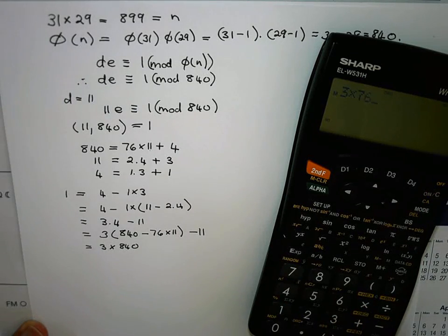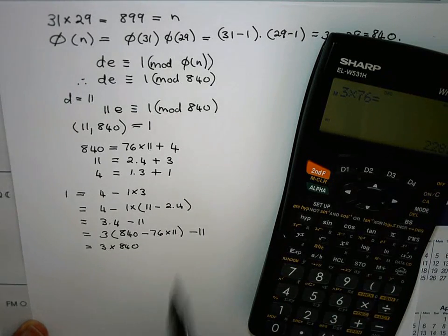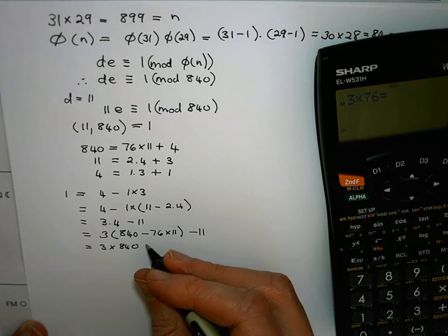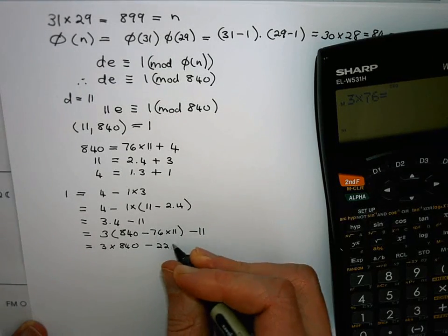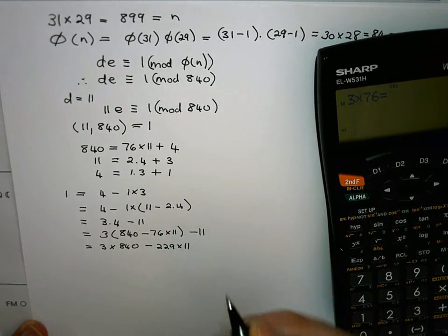So 3 times 76 is 228 minus another one gives me minus 229 times 11.